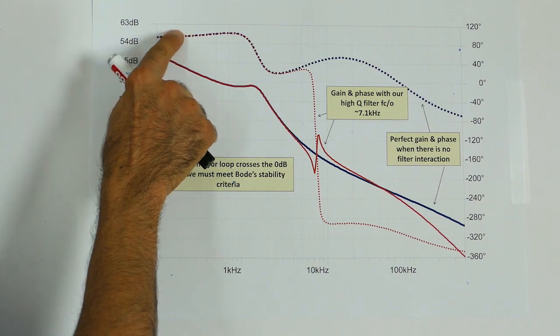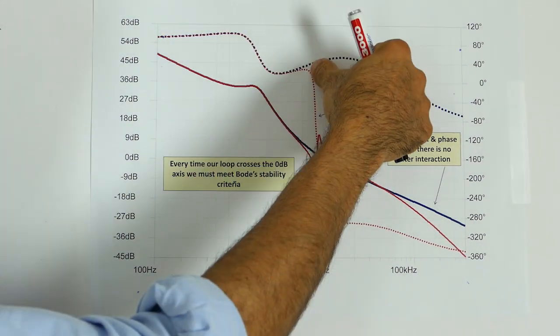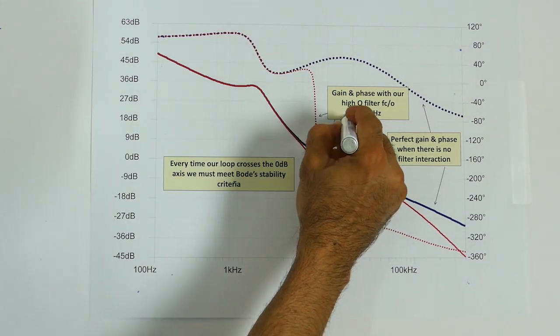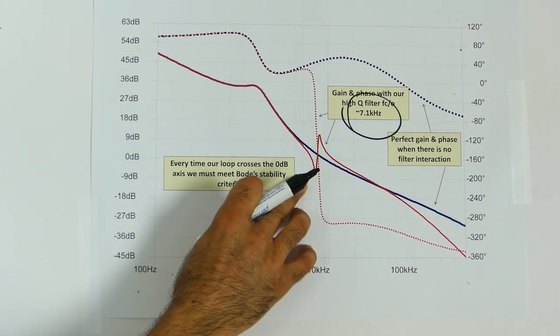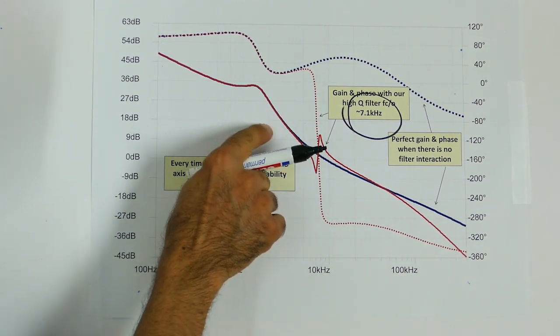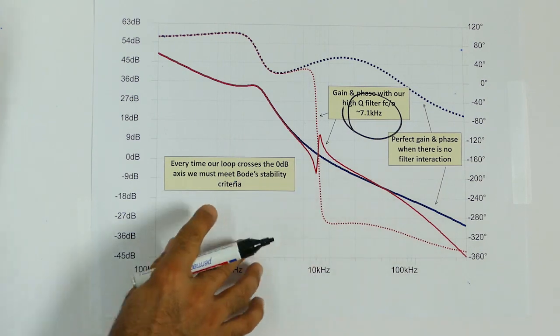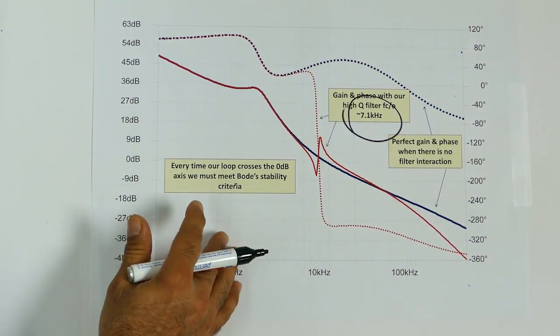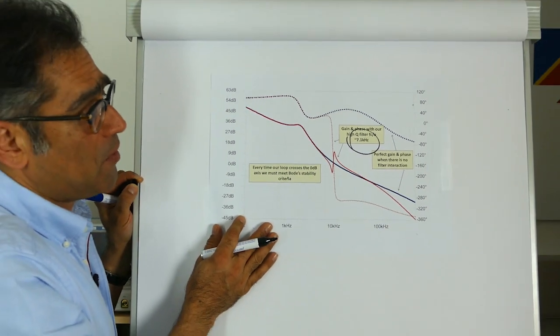You can also see from the phase the red trace on the phase collapses at the cutoff frequency or the resonance frequency of the filter, which in this case is around seven kilohertz. Now if your loop is crossing the zero dB axis several times you have to meet the stability criteria every time and that is why this causes instability problems.